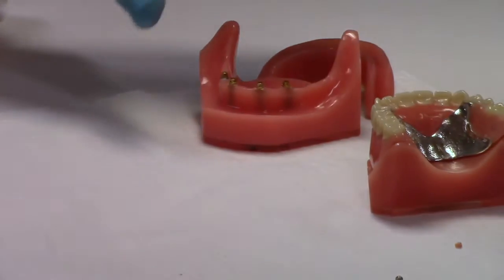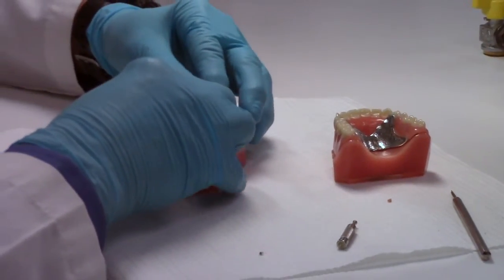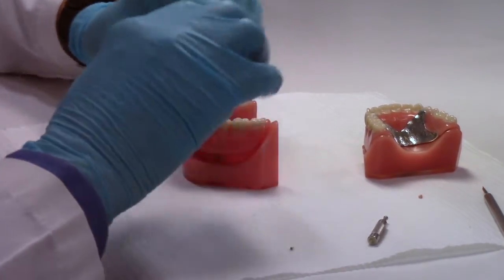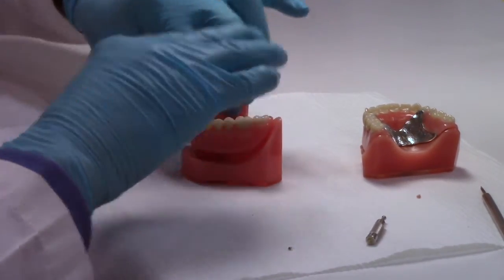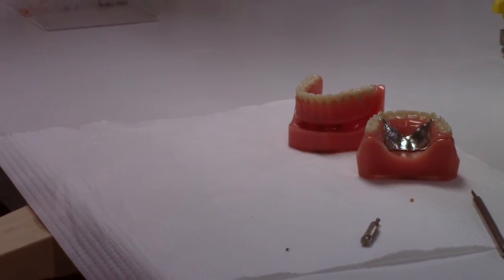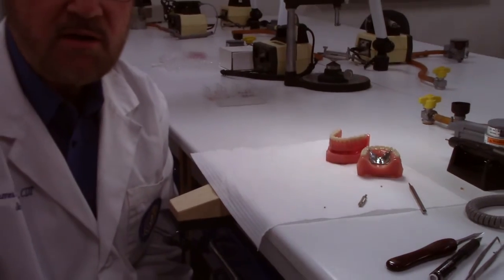And on the overdenture, all replaced. So that's it. That's the procedure on how to change an ERA male.